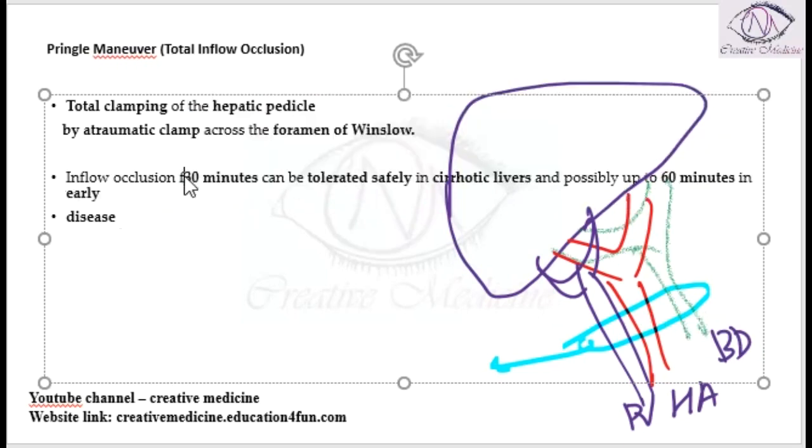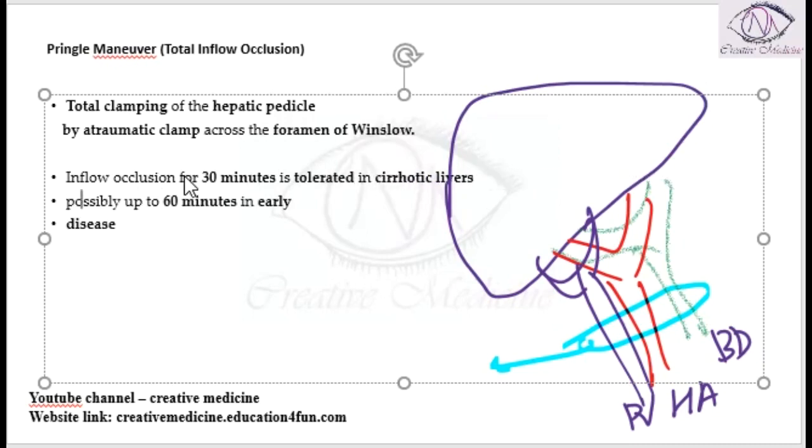Inflow occlusions for up to 30 minutes is tolerated in cirrhotic livers. In cirrhotic livers, the liver can tolerate up to 30 minutes whereas in early disease, if the disease is in the early stages, then it can tolerate up to 60 minutes in the early disease.